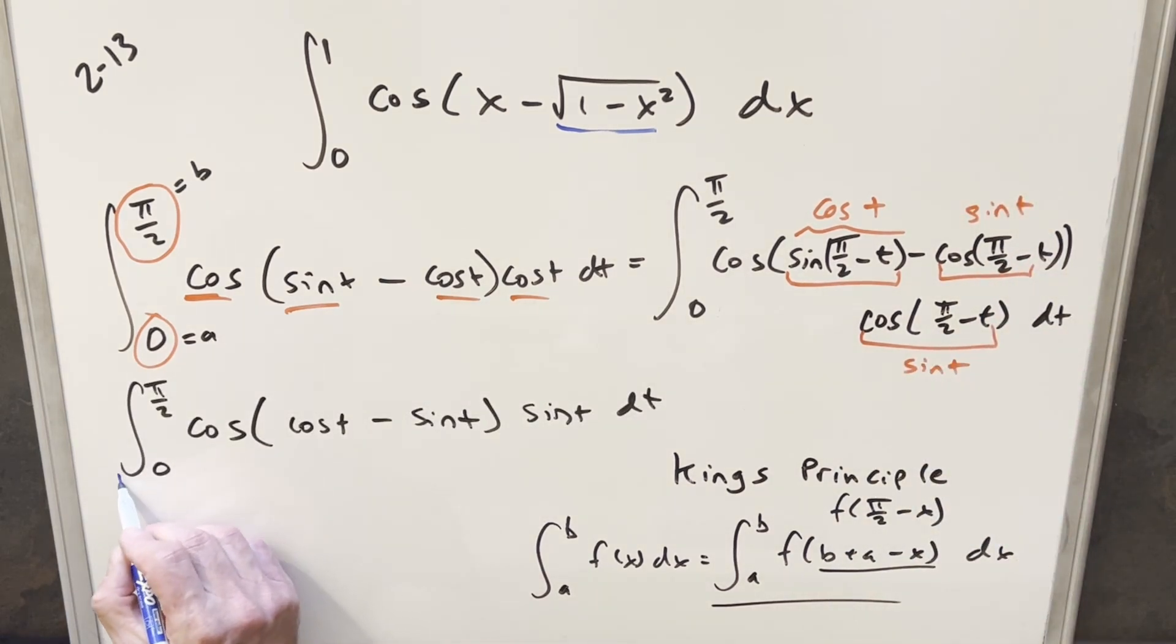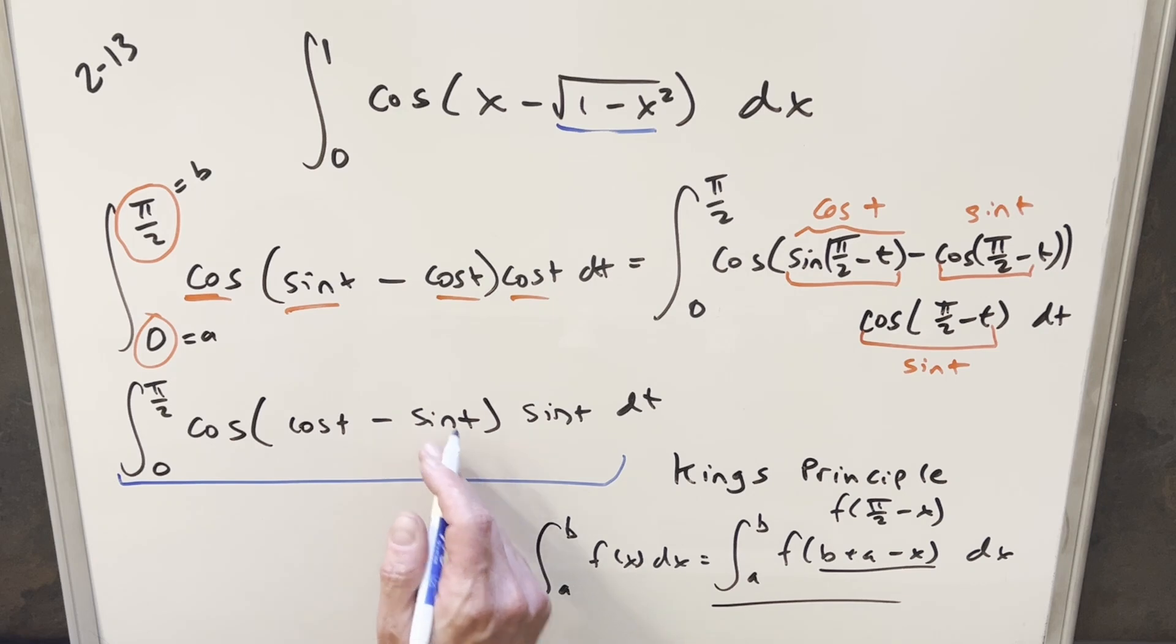So now here with the rewrite you start to notice that this is actually starting to look a lot like what we had before, and one thing we can do to make it more similar is just what we have here inside a cosine.